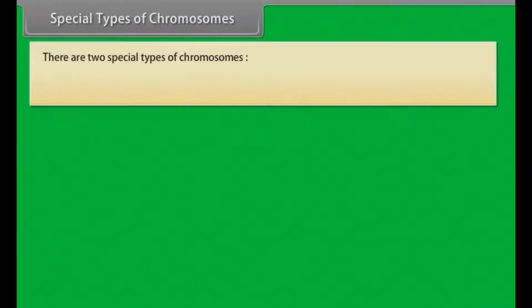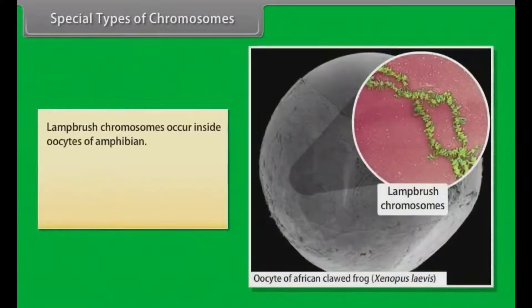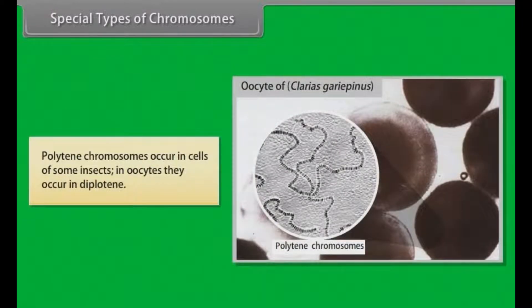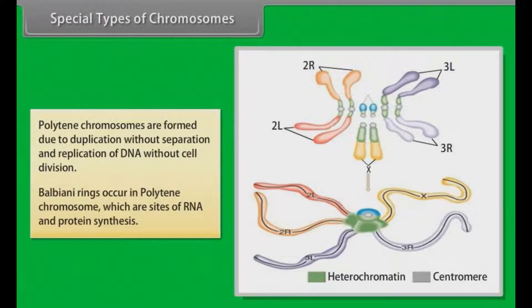Special types of chromosomes: There are two special types — lampbrush chromosomes and polytene chromosomes. Lampbrush chromosomes occur inside oocytes of amphibians. Loops of lampbrush chromosomes possess DNA, RNA, and proteins, and are observed in meiotic prophase. Polytene chromosomes occur in cells of some insects and in oocytes they occur in diplotene. They are formed due to duplication without separation and replication of DNA without cell division. Balbiani rings occur in polytene chromosomes, which are sites of RNA and protein synthesis.